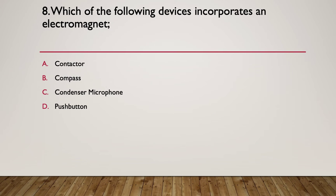Question eight, which of the following devices incorporates an electromagnet? From our little list here. A, a contactor. B, a compass. C, a condenser microphone. Or D, a push button. Which of these devices incorporates an electromagnet? Here's the hint. Draw a diagram that shows how each is constructed.